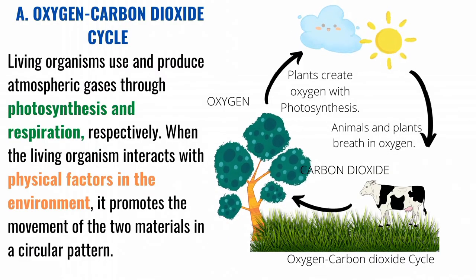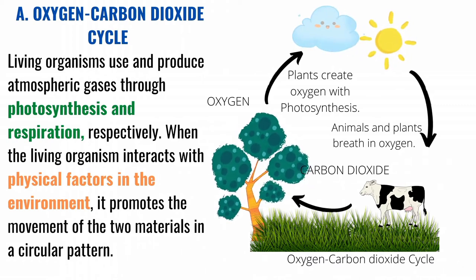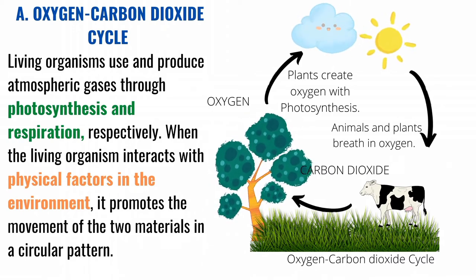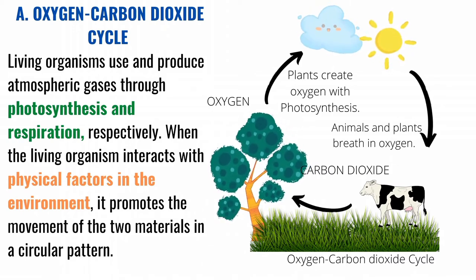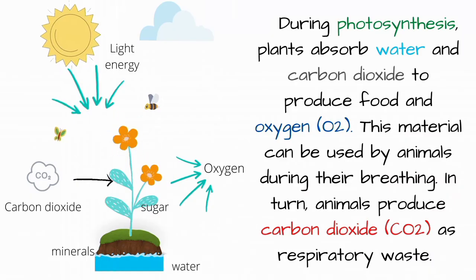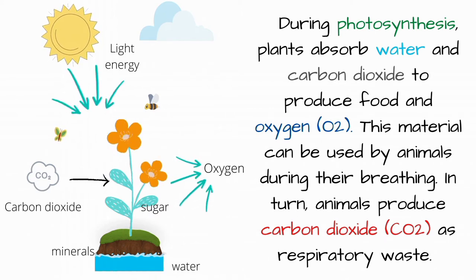Oxygen-carbon dioxide cycle. Living organisms use and produce atmospheric gases through photosynthesis and respiration respectively. When the living organism interacts with physical factors in the environment, it promotes the movement of the two materials in a circular pattern. During photosynthesis, plants absorb water and carbon dioxide to produce food and oxygen. This material can be used by animals during their breathing. In turn, animals produce carbon dioxide as respiratory waste.